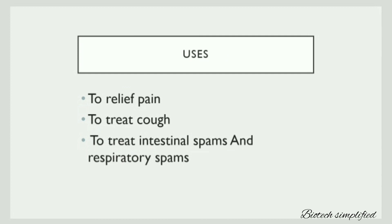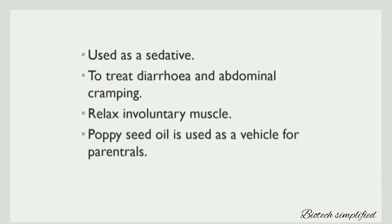Heroin is used to relieve pain and to treat coughs. It is also used to treat intestinal spasms and respiratory spasms. It is used as a sedative and to treat diarrhoea and abdominal cramping. It is also used to relax involuntary muscles. Poppy seed oil is also used as a vehicle for parenterals.